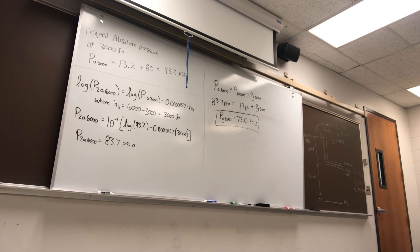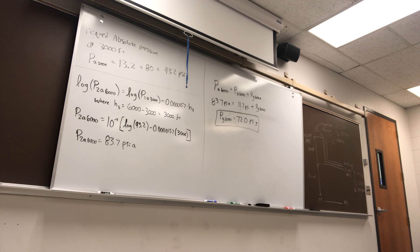Well, gauge pressure is just what you're reading on the board. That's a good question — how to explain that. I mean, we found that the absolute pressure inside the system needs to be 93.2. We don't have a higher pressure when you go down? You get a higher pressure from the column of air. I'll think of how to explain this better for you and get back to you, because it is hard to wrap your brain around.